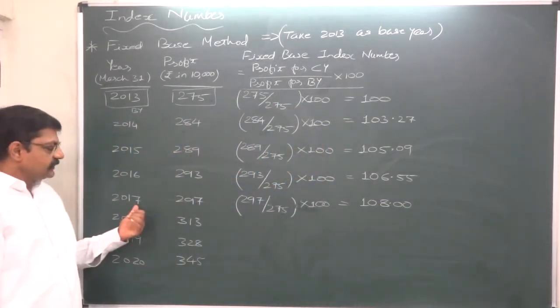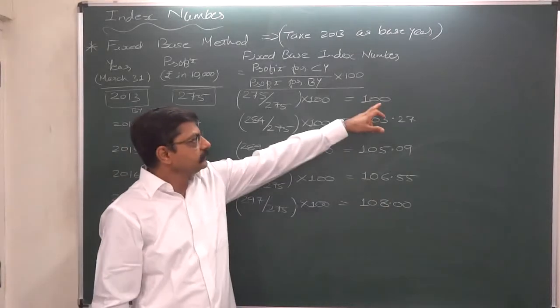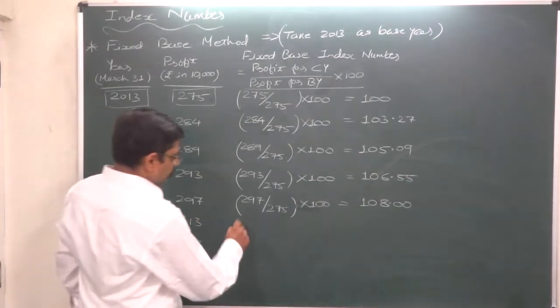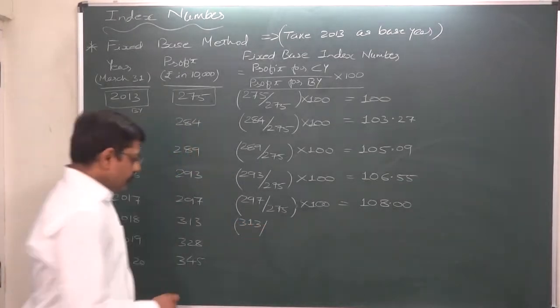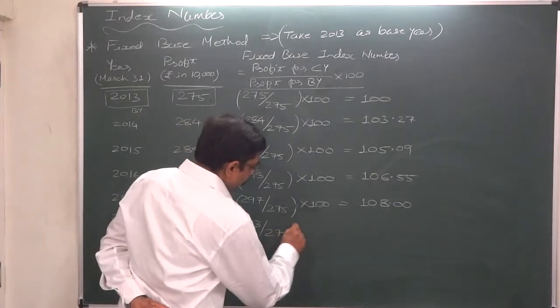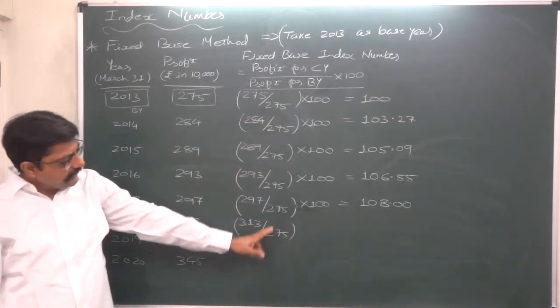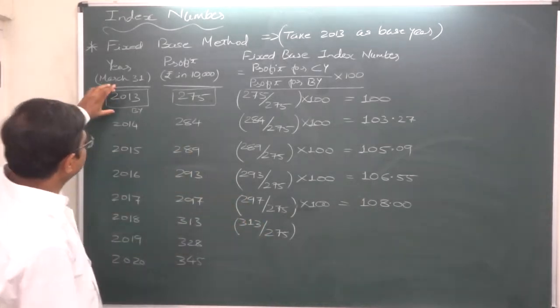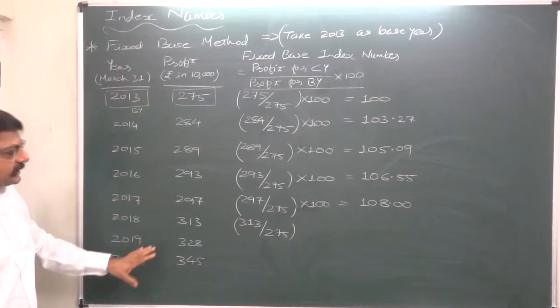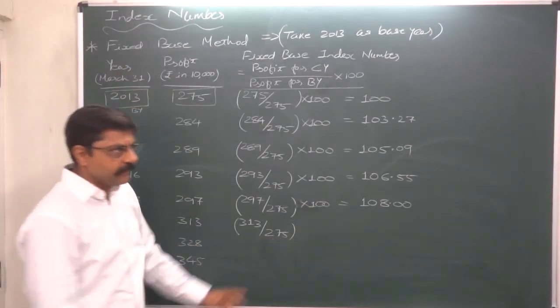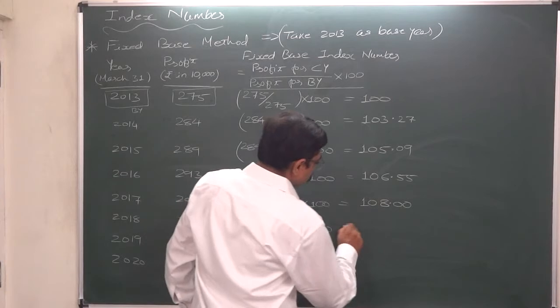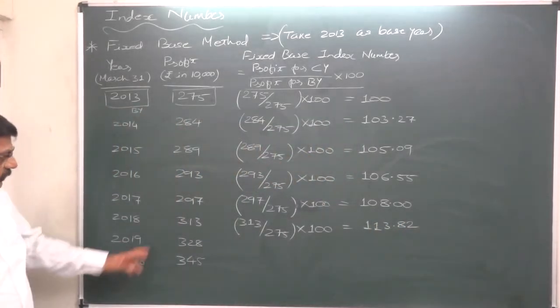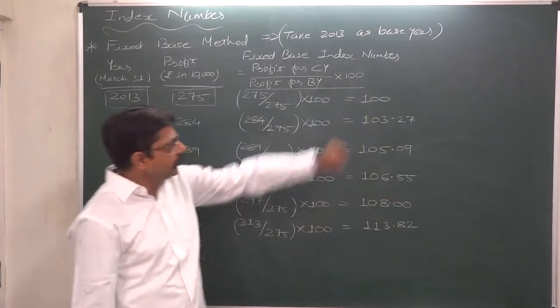In 2017 profit increased by 8% as compared to the profit we made in 2013. In 2018, what is the situation? 313 divided by 275. We are dividing all values by 275 every year because we follow the fixed base method of calculating index number, and our fixed base year is 2013 for the whole data. 313 divided by 275 into 100, the index number comes to 113.82 approximately.